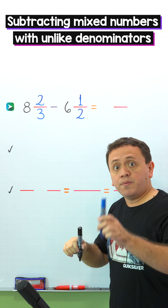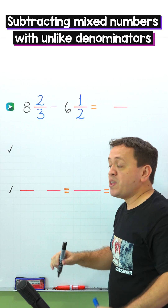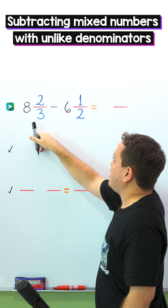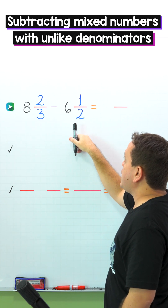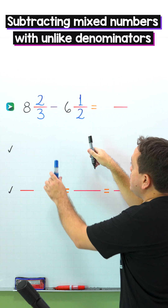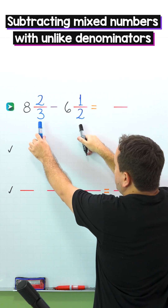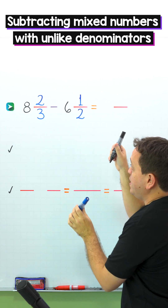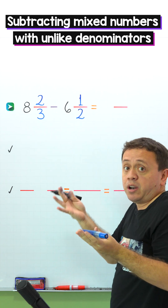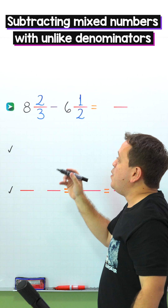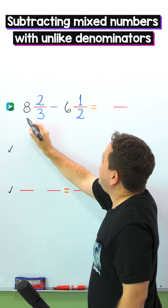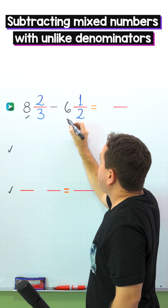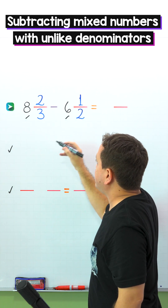Are you ready for the first example? In this example, we need to subtract 8 and 2 thirds minus 6 and 1 half. These mixed numbers have different denominators. To find the difference, we'll start by subtracting the whole numbers. In this case, the whole numbers are 8 and 6.